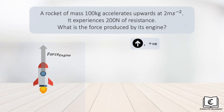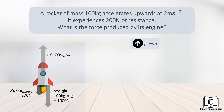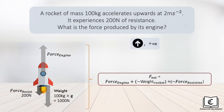We have the force of the engine acting upwards, which we are tasked to find. The resistive force of 200 newtons acting downwards. And the weight of the rocket, which is 100 kilograms multiplied by gravitational acceleration of 10, giving us 1000 newtons acting downwards. Note that weight and resistive force carry negative signs as they are pointing downwards.